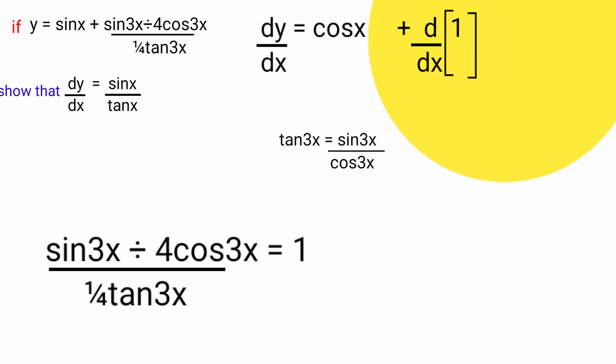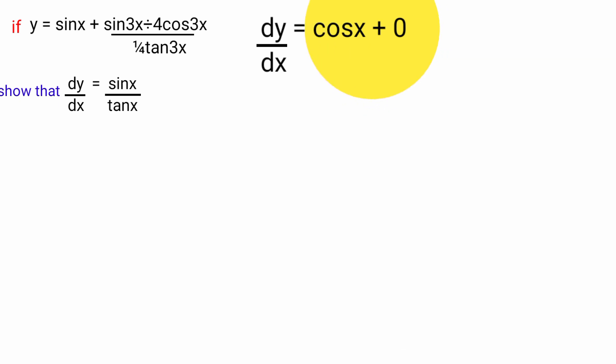The differential of 1 with respect to x is 0. So cos x plus 0 equals cos x, meaning dy/dx equals cos x. Now, how is it possible that cos x is the same as sin x over tan x?